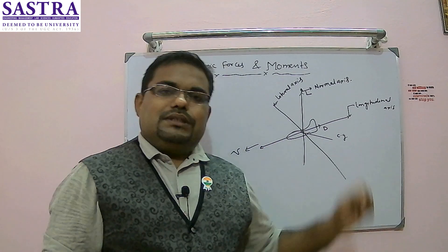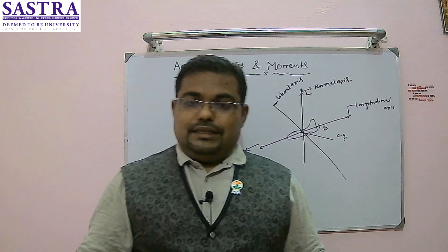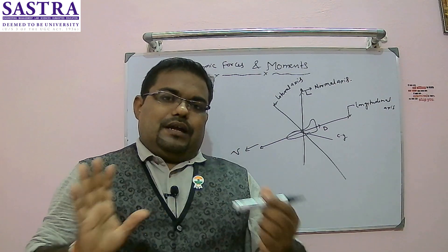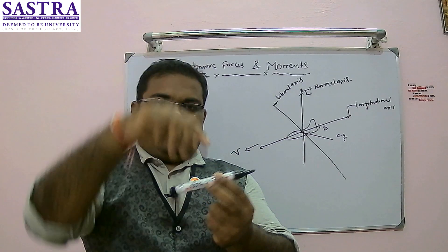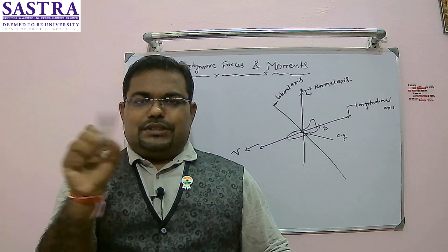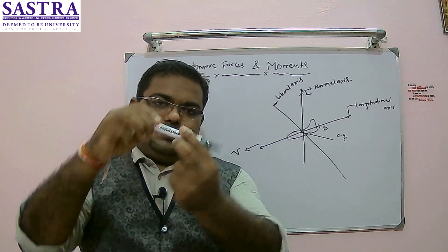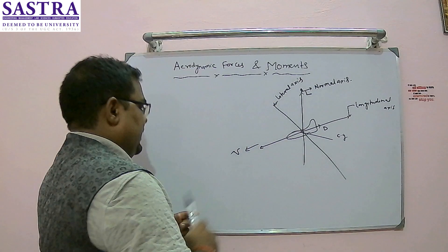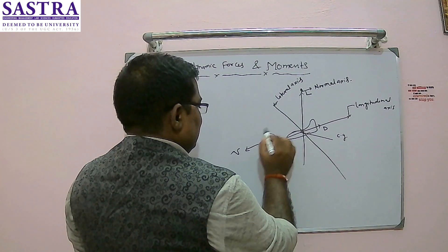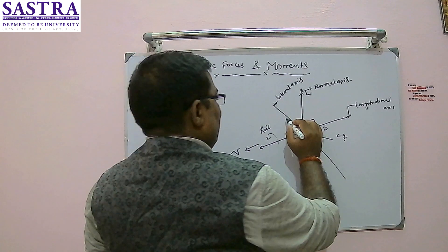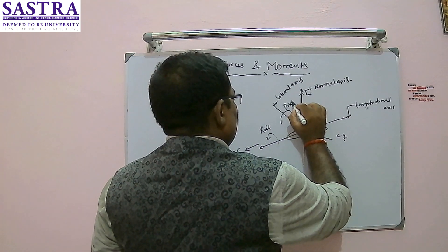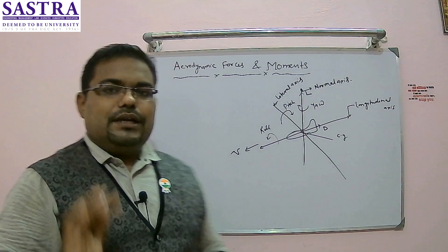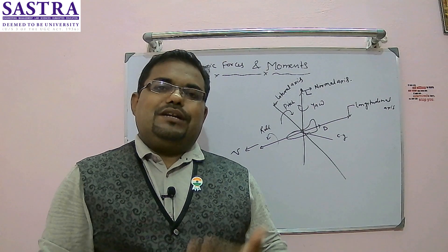There are three motions: rolling happens about the longitudinal axis; yawing happens about the normal axis — the aircraft swings side to side; pitching happens about the lateral axis — the nose goes up and down. These three motions are controlled by three moments: rolling moment, pitching moment, and yawing moment.